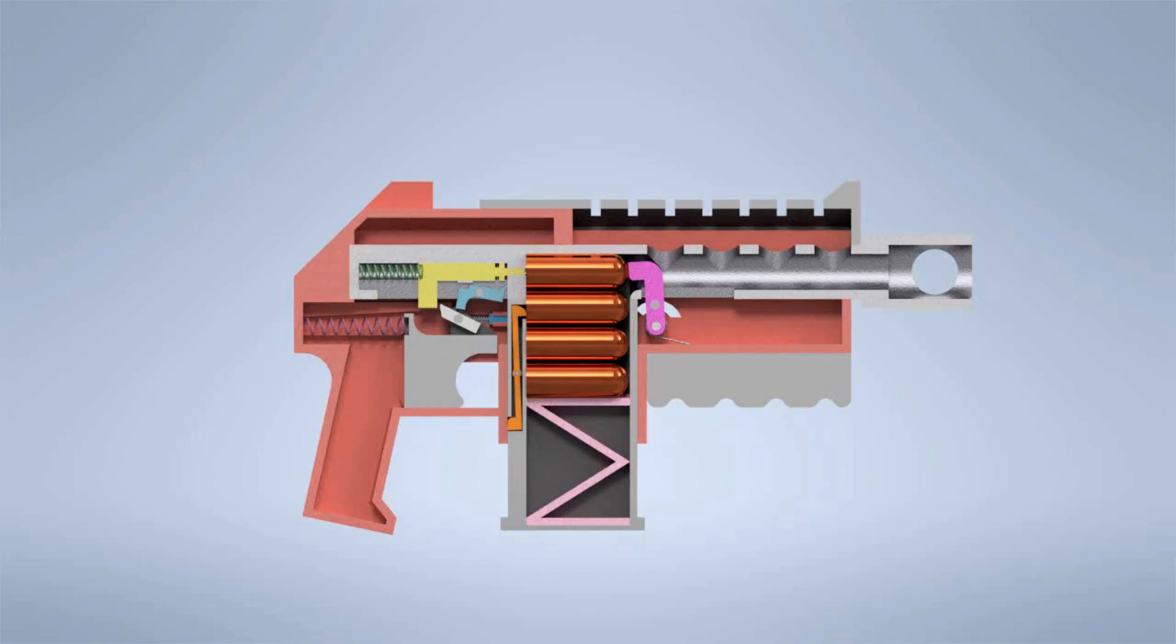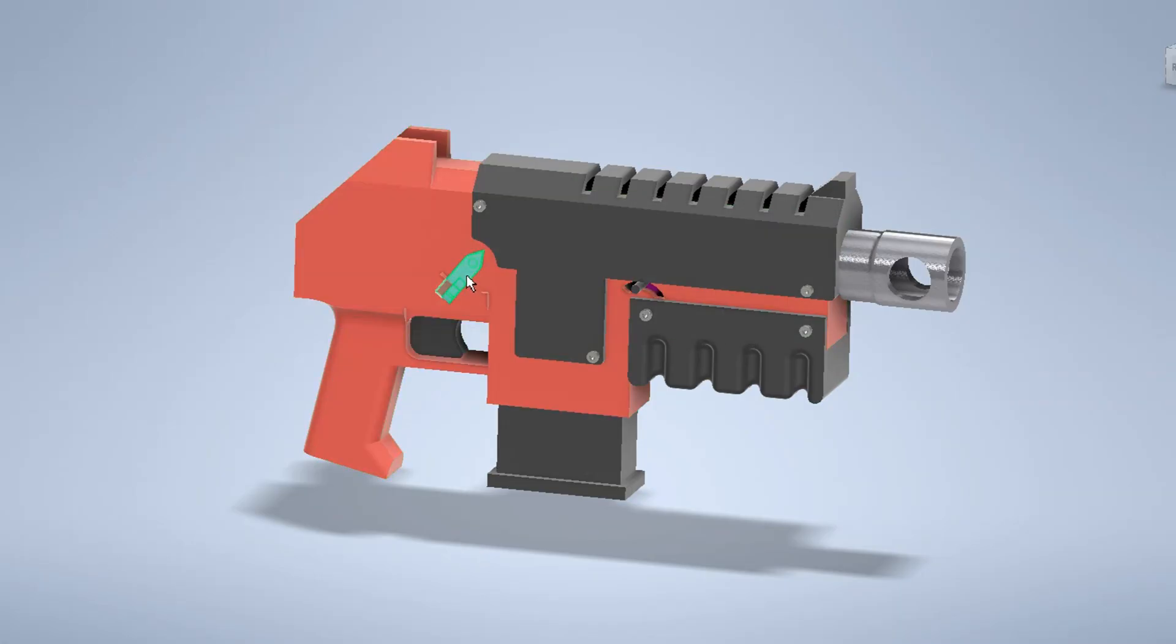The firing pin uses a striker-fired double-action mechanism, meaning it is both primed and released with a single pull of the trigger. Just below the firing pin is a latch that acts as a safety, preventing accidental discharge. The safety switch itself is located here.